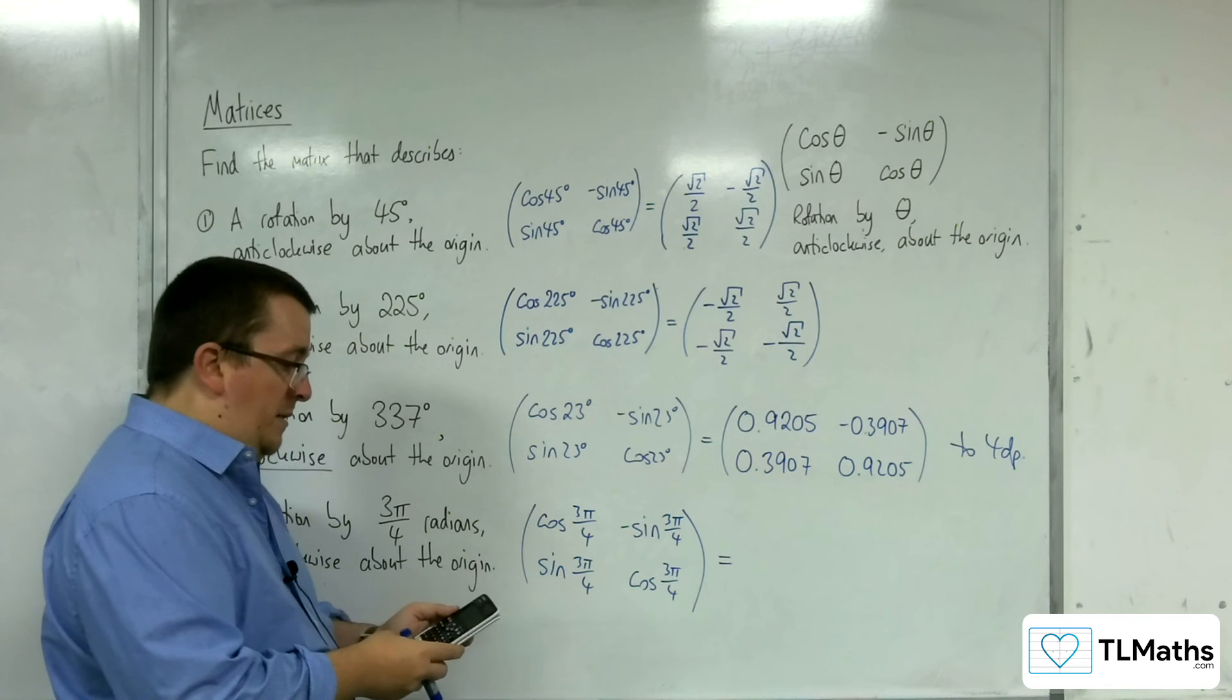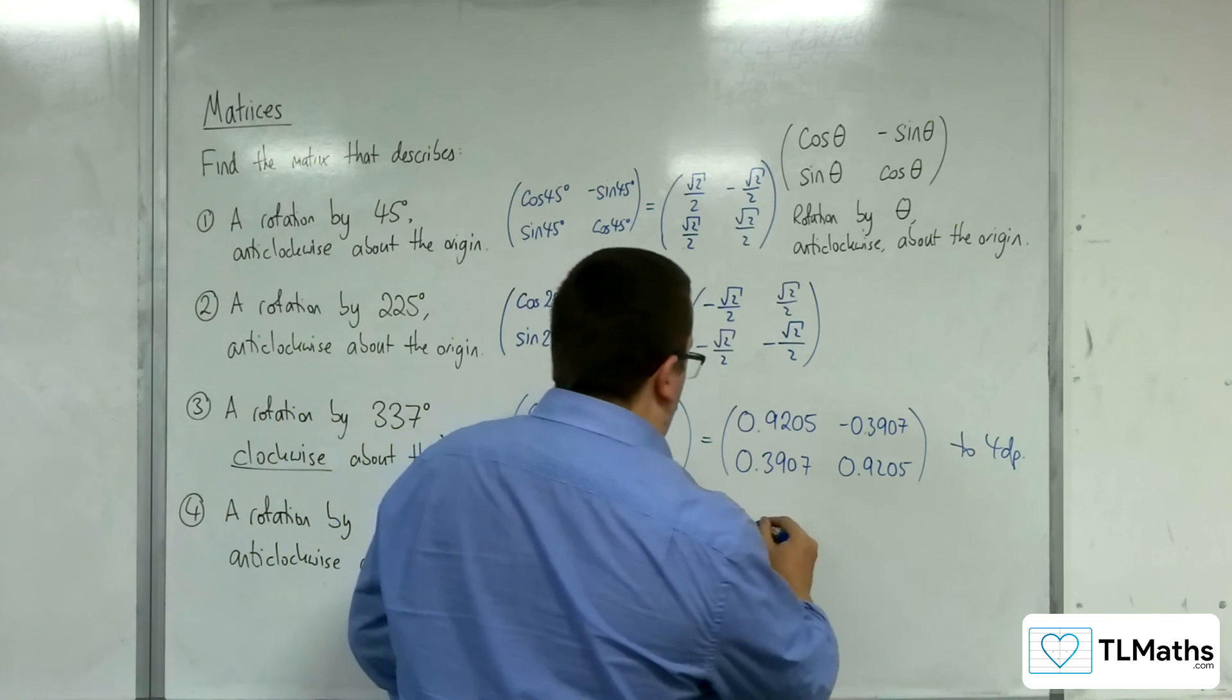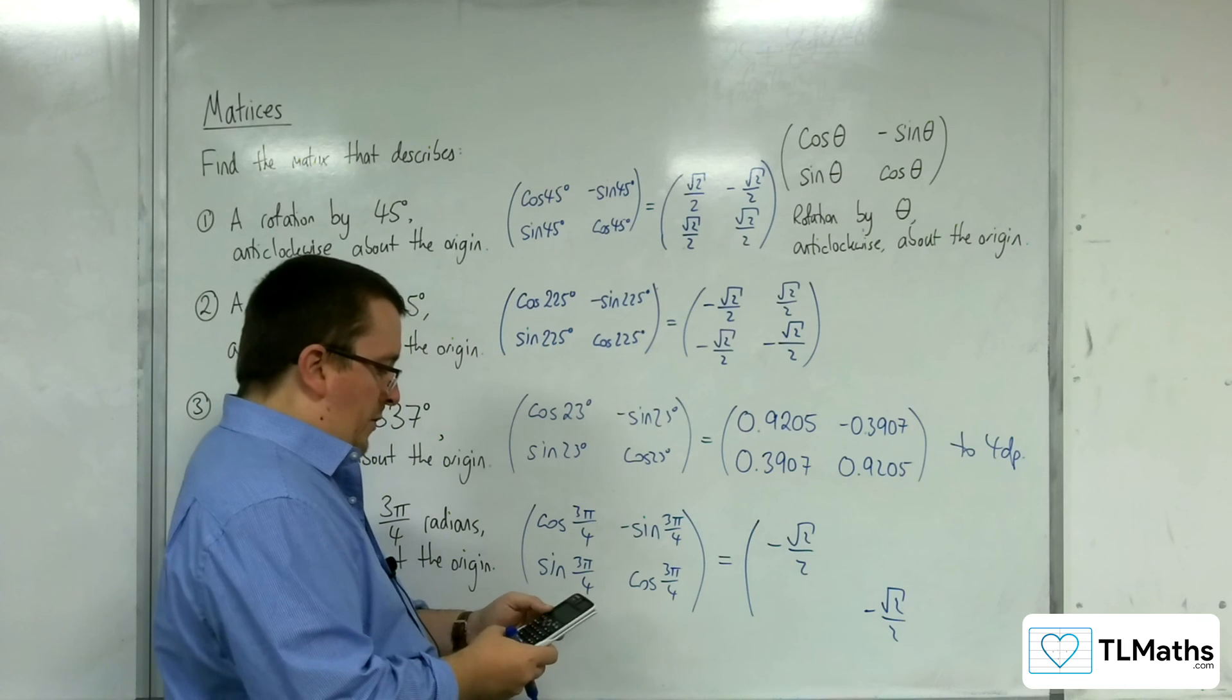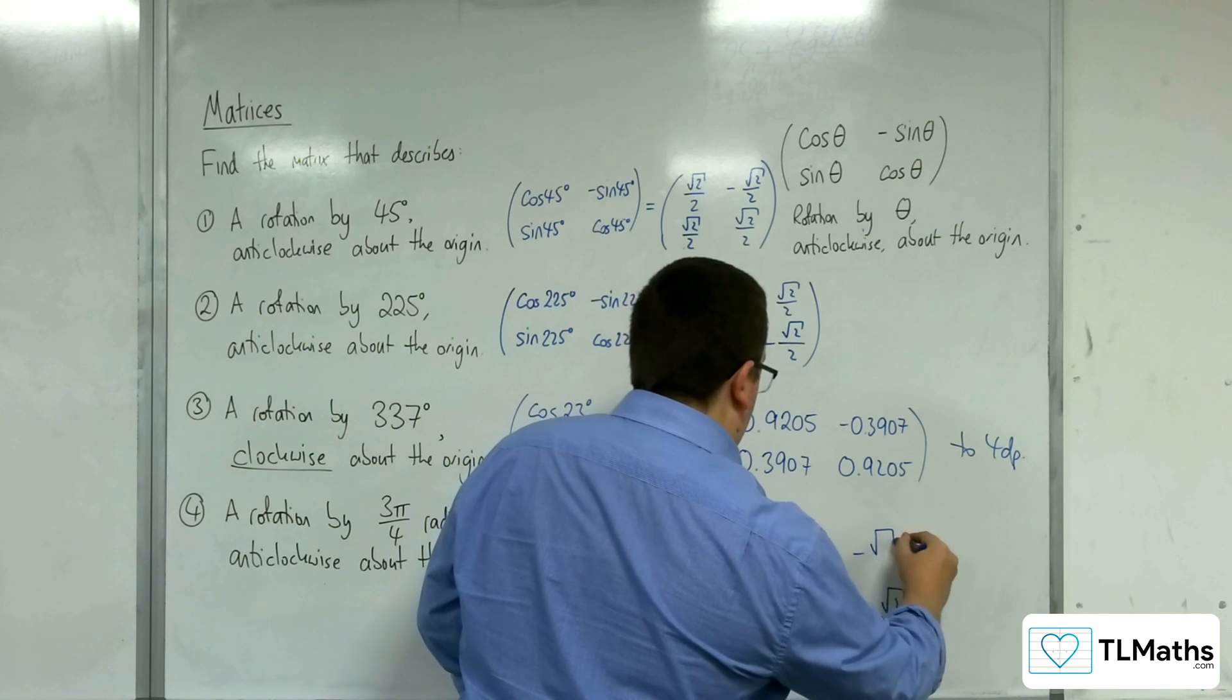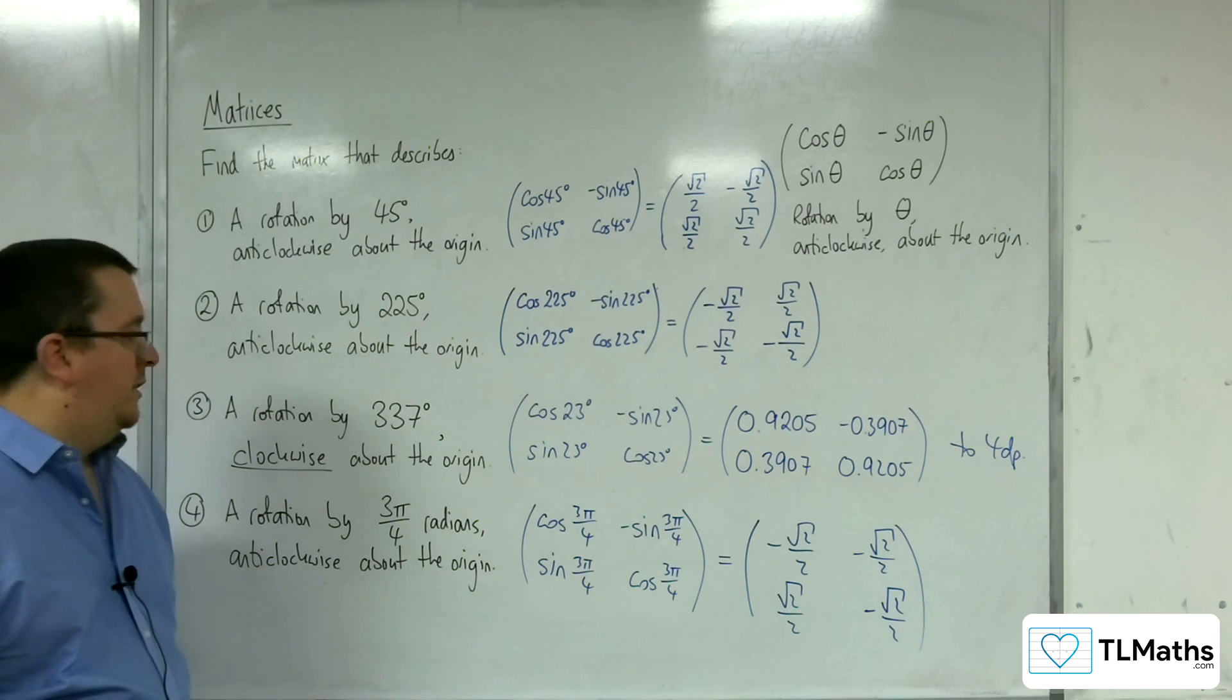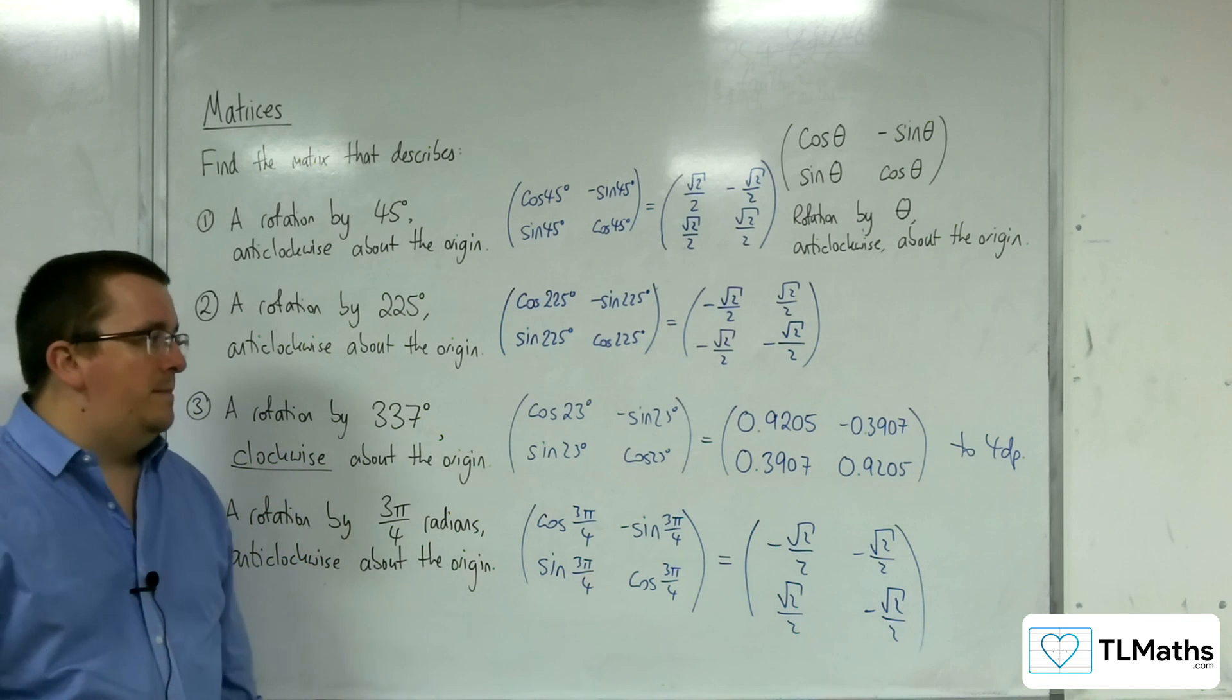So shift, then setup, number 2 for angle unit, number 2 for radian. So then cosine of 3 pi over 4 is negative root 2 over 2, so we've got negative root 2 over 2 down here as well. Sine of 3 pi over 4 is root 2 over 2, so that's negative root 2 over 2. And so this is our matrix for a rotation by 3 pi over 4 radians anticlockwise about the origin. And so this is how we can utilise this matrix in order to find the matrix that we need.